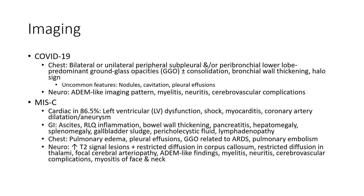Chest findings in MIS-C include pulmonary edema, pleural effusion, and ground-glass opacities related to ARDS, as well as pulmonary embolism. Neuro findings include increased T2 signal lesions, restricted diffusion in the corpus callosum, thalamic focal restricted diffusion, cerebral infarction, ADEM-like findings, myelitis, neuritis, cerebrovascular complications, and myositis.